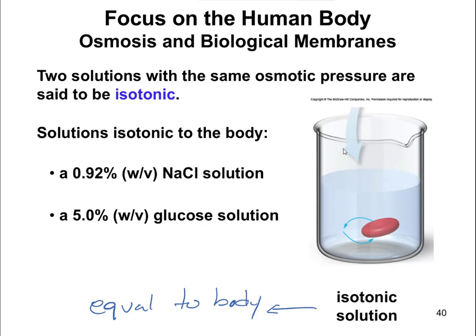It has the same concentration of particles as the body. Examples of this are a 0.92% weight-volume sodium chloride solution or a 5% weight-volume glucose solution. These are solutions you could be given in a hospital that would be referred to as an isotonic solution. This 0.92% sodium chloride solution is what a typical IV drip would be. So you put a red blood cell in an isotonic solution.